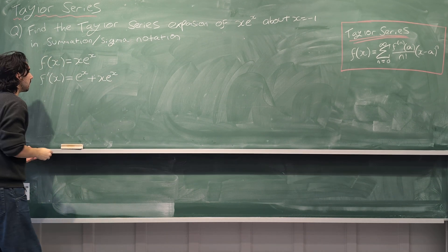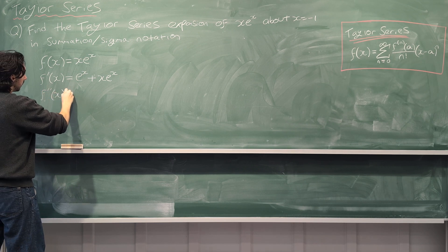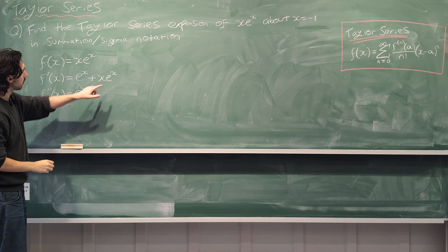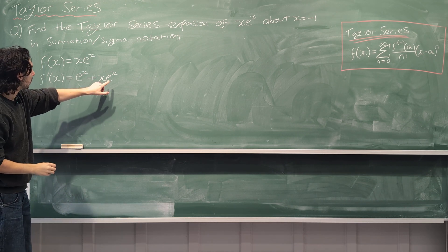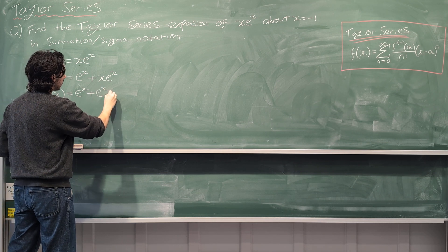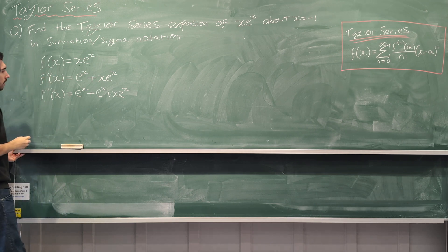All right, let's go again. The second derivative is going to be e^x plus, and then we have the original function again. So we already know that the original function differentiates to e^x plus xe^x.